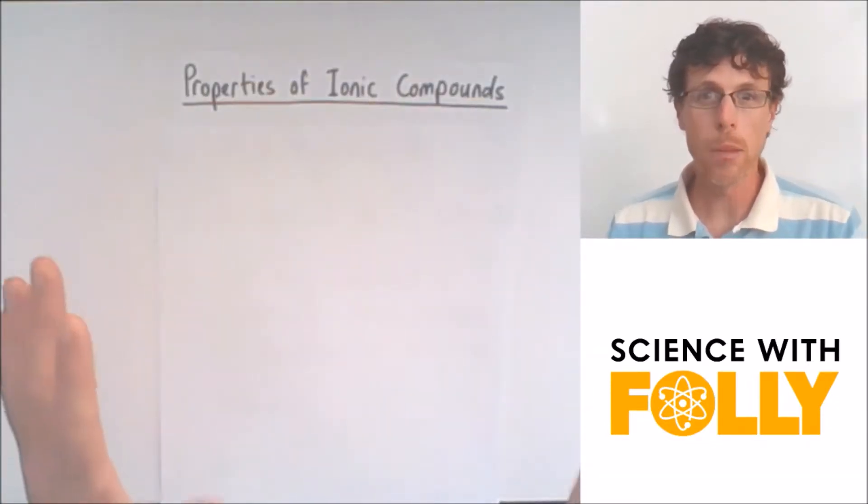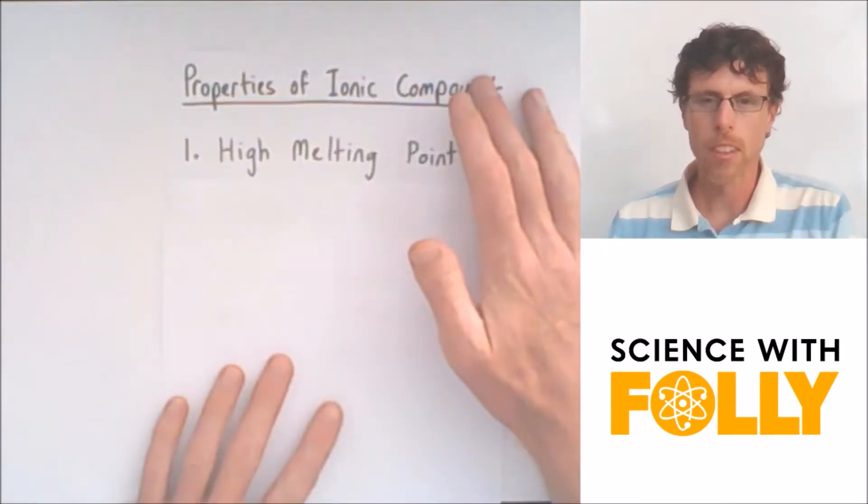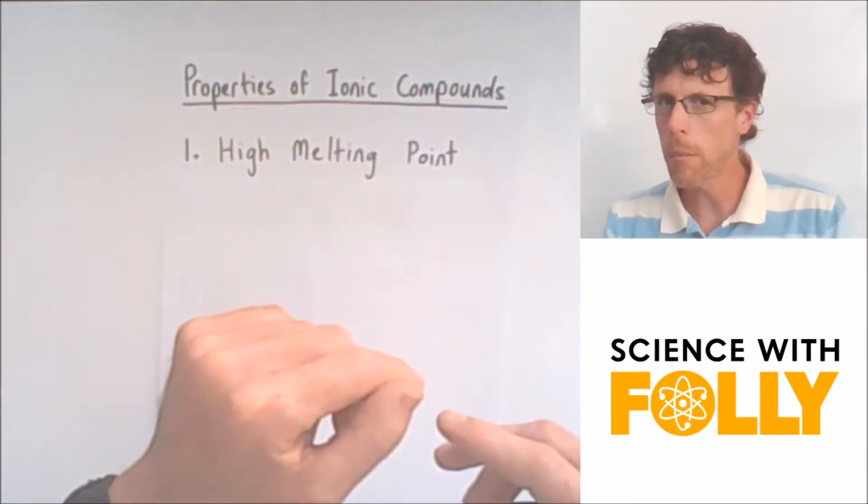Now, you've got to know some key properties of ionic compounds. The first one is that they all have a high melting point. And why do they have a high melting point?